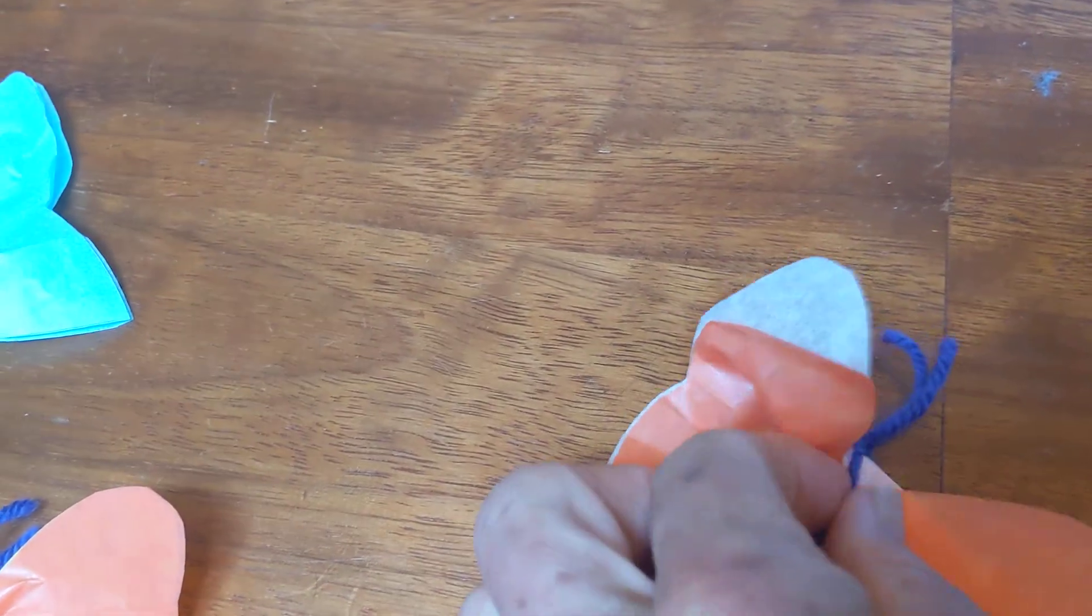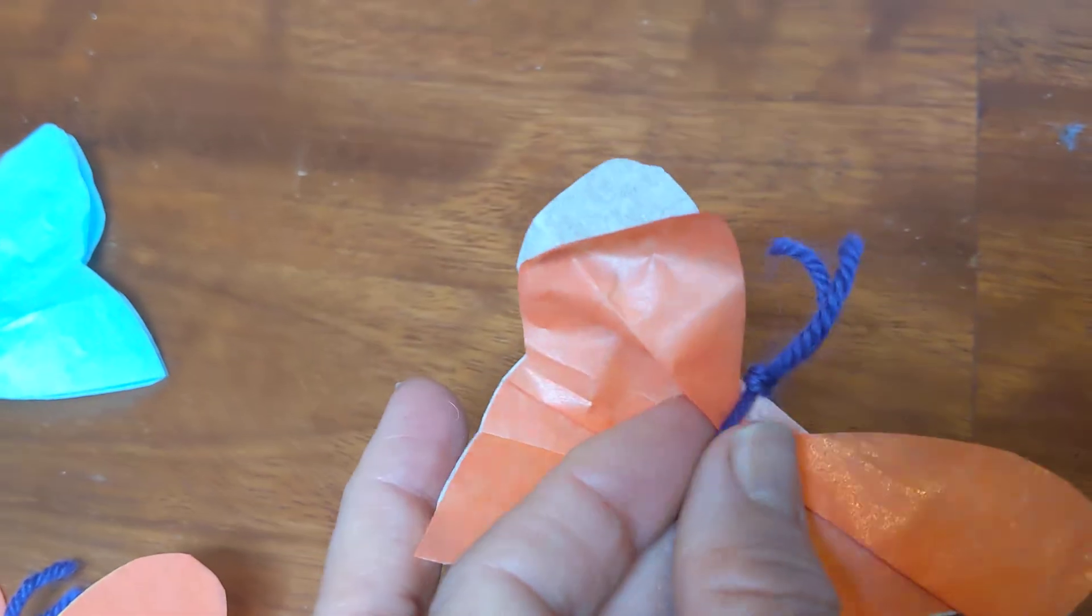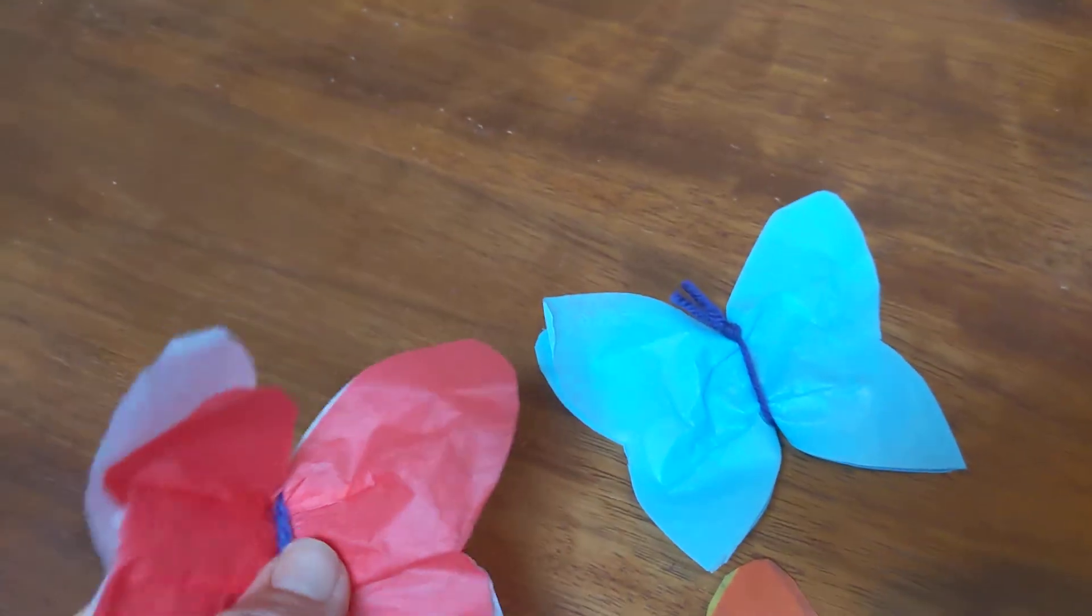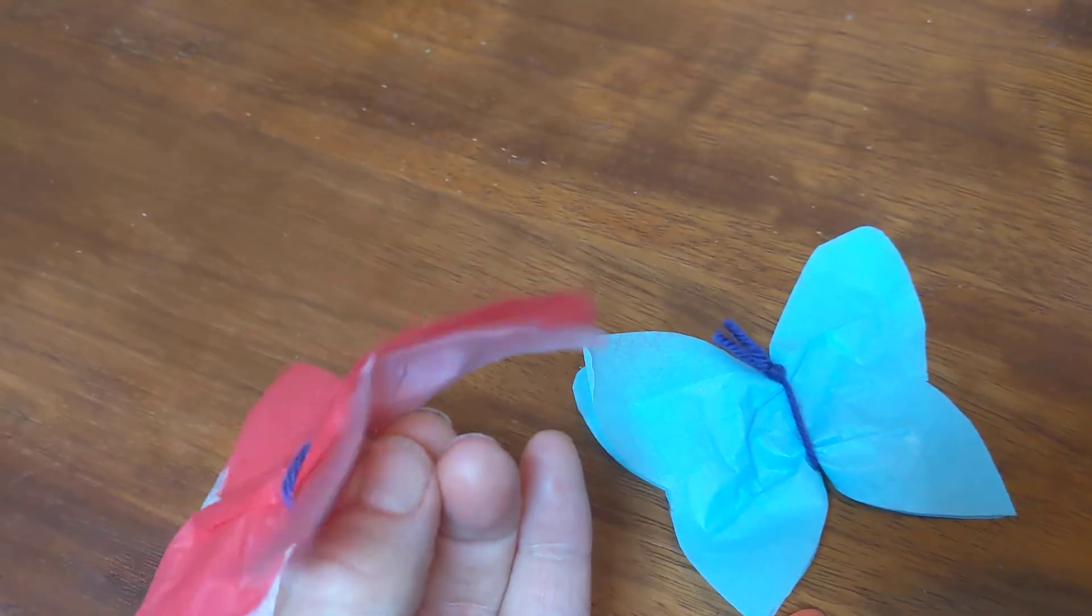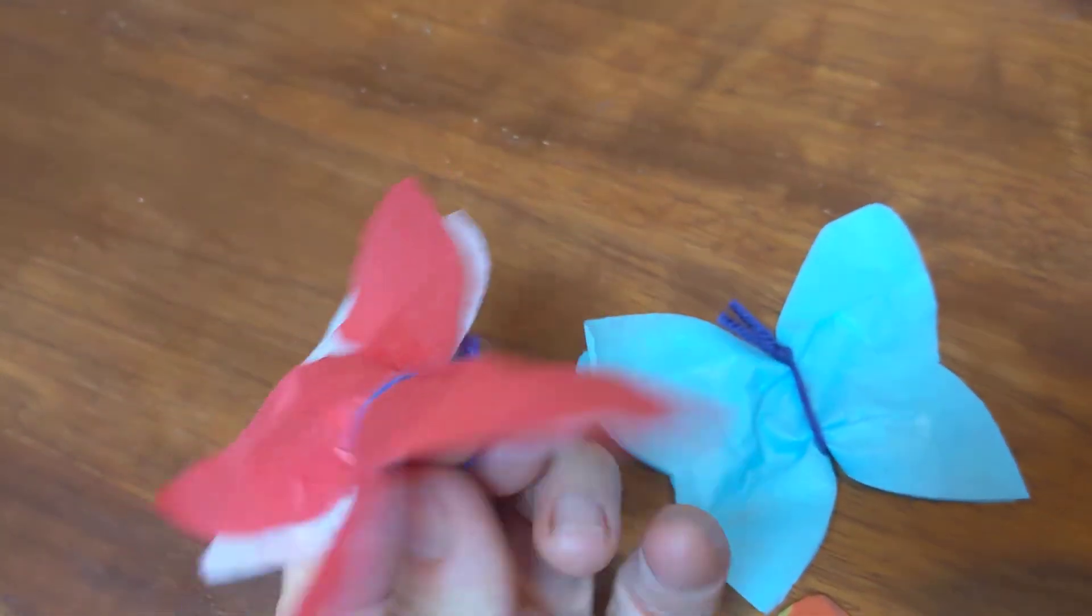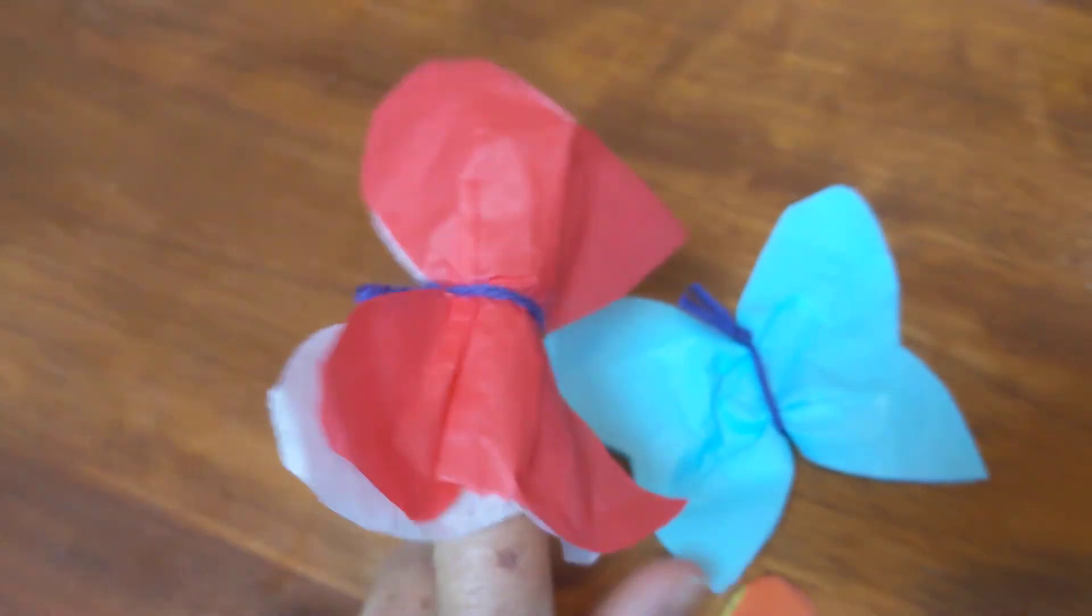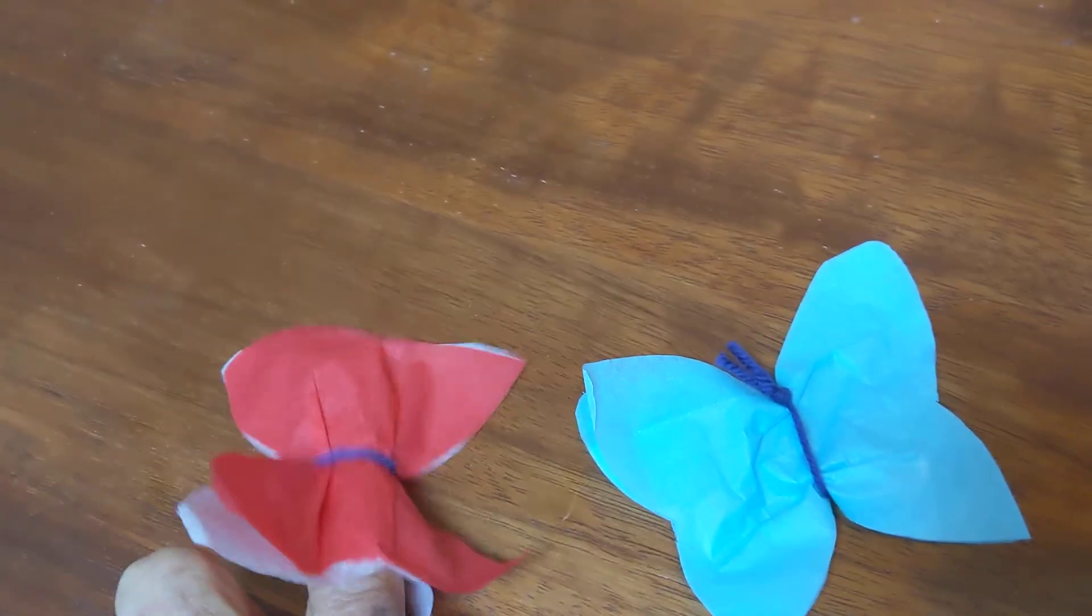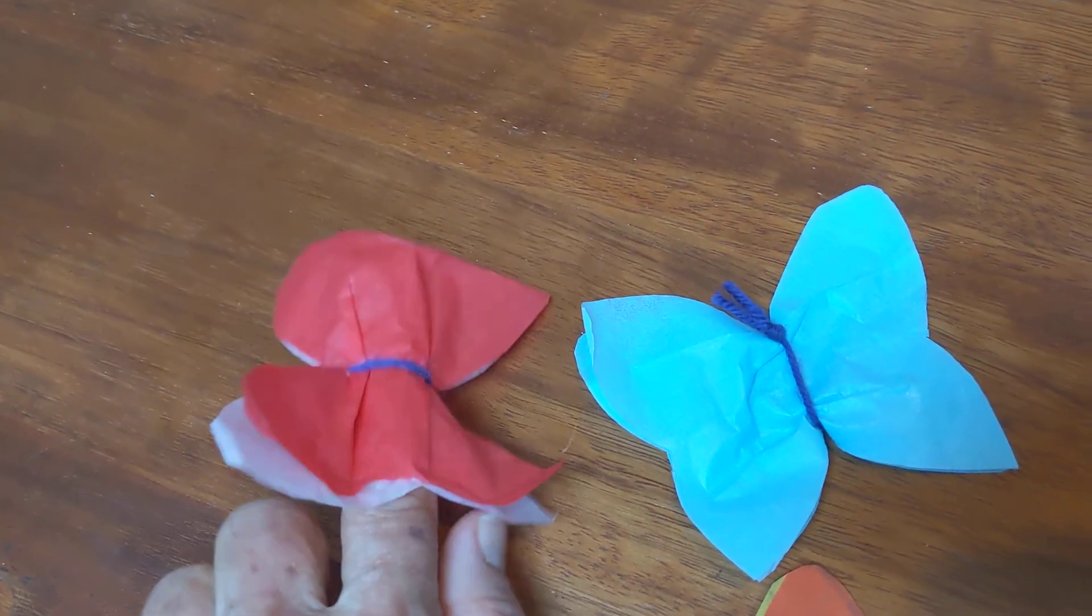When you knot the knot, you make it loose enough to put a finger in, so that when you've got your finished butterfly, the one I made earlier, you can put your finger through the wool and then use the butterfly on the top of your finger to tap on the tapping points.